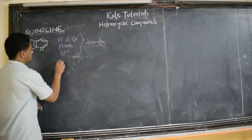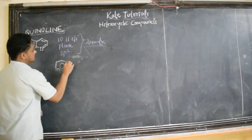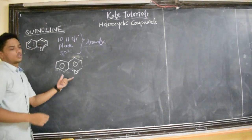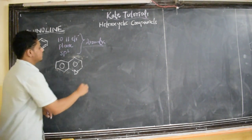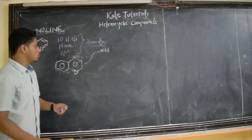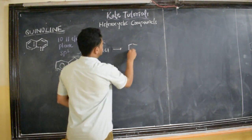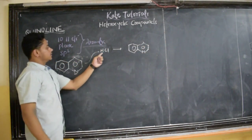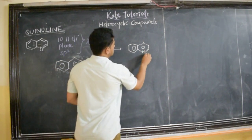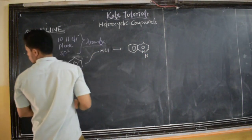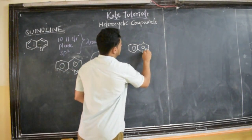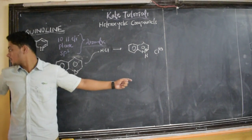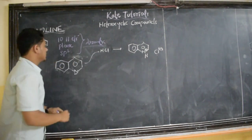What happens here? If this is my quinoline — I can draw quinoline like this or like this, no problem — if I treat it with HCl, which is a good acid, I am going to get the following compound. Because of the lone pair of electrons on nitrogen, it is going to donate to hydrogen. So it becomes like this: HCl attacks this nitrogen, nitrogen gets a positive charge, and chlorine gets a negative charge. So that is the compound we get, and this is the intermediate.